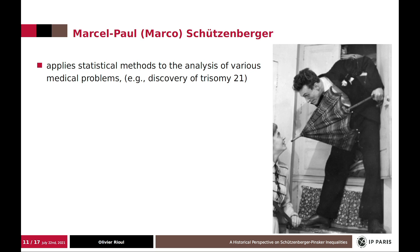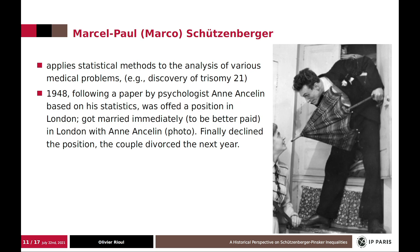So he was a medicist. He also applied statistical methods to the analysis of various mathematical problems. He's one of the contributors to the discovery of Trisomy 21. And in 1948, based on his statistics, a well-known psychologist, Anne Ancelet, was giving a presentation. And from that statistic, he was offered a position in London. And then he went to London and he said he would be better paid if he were married.